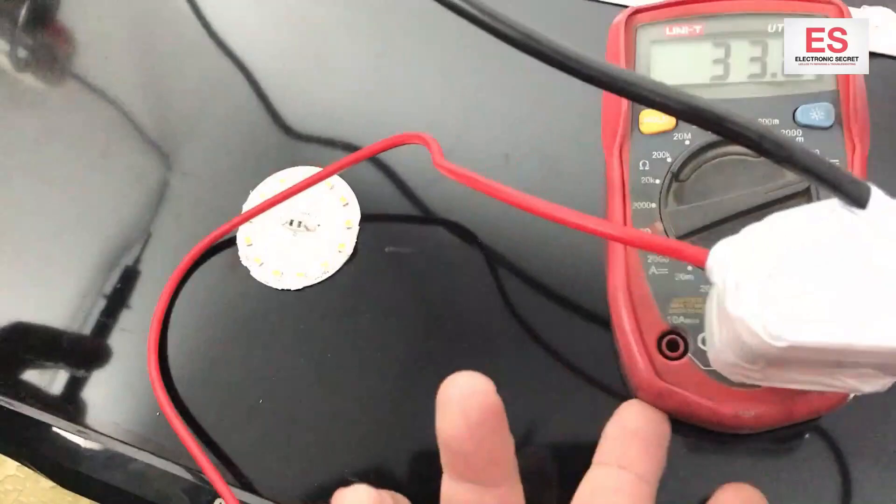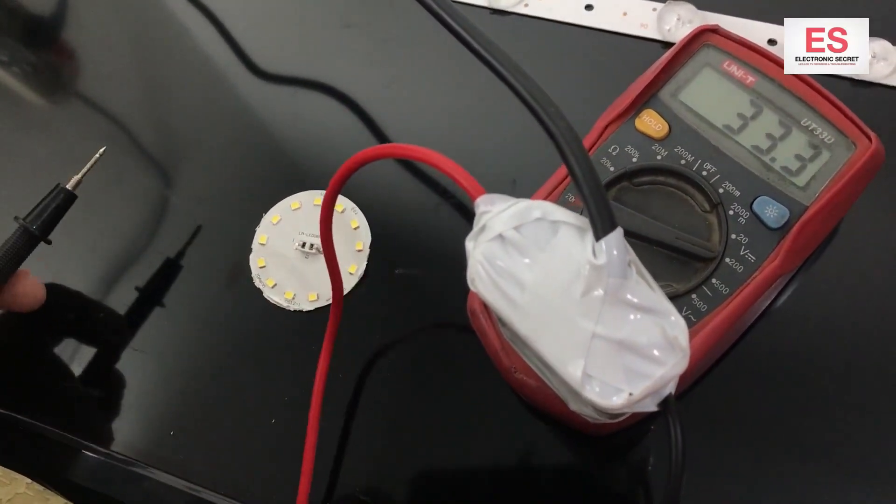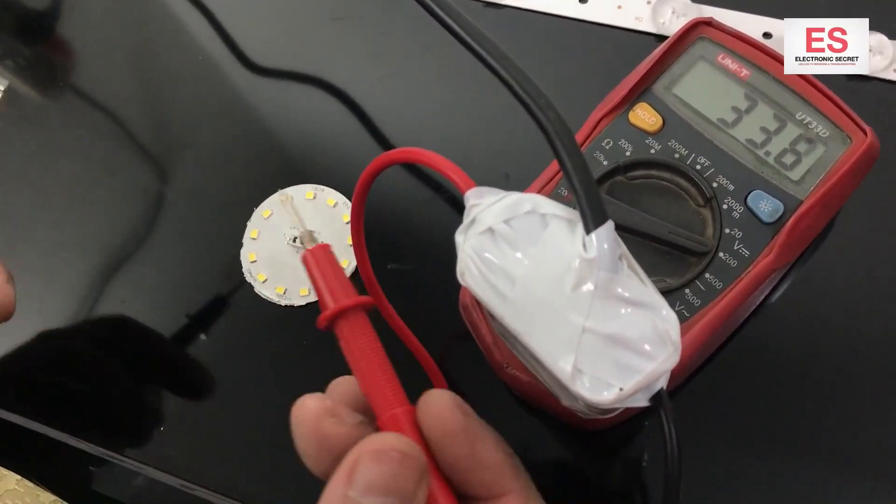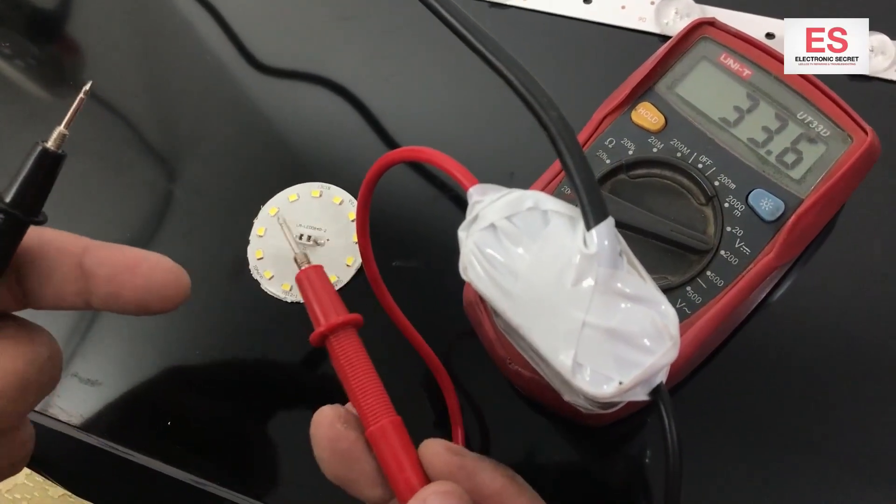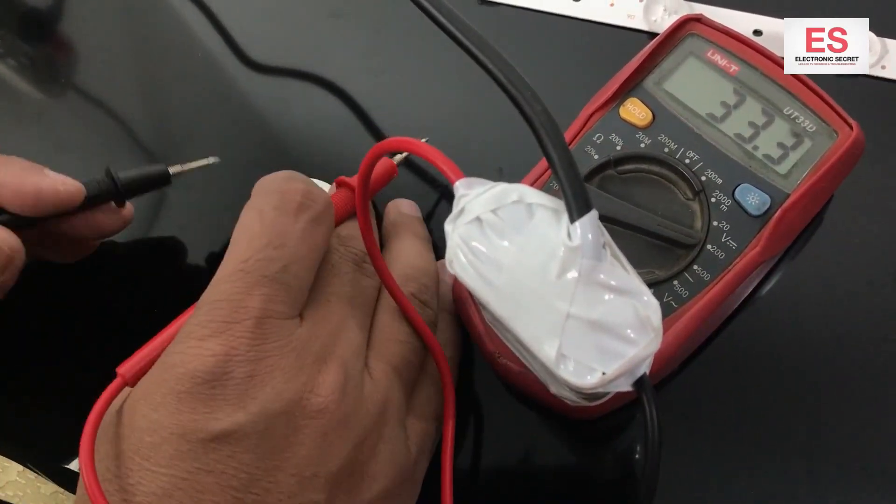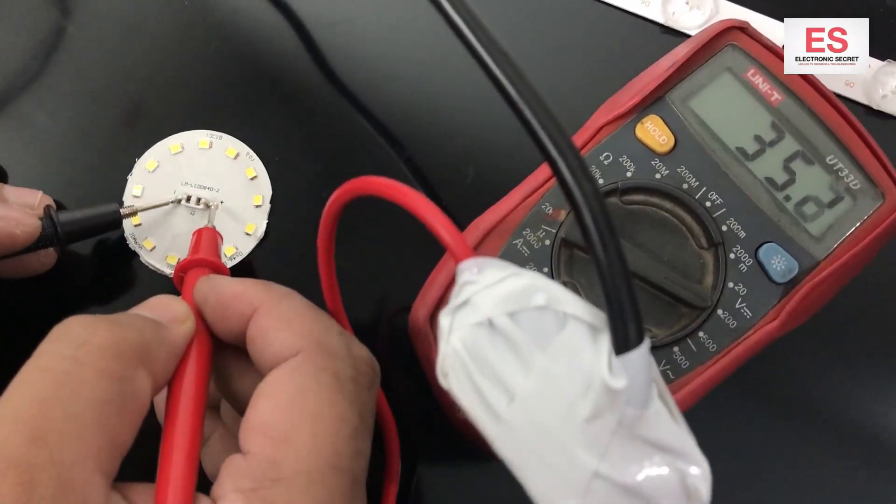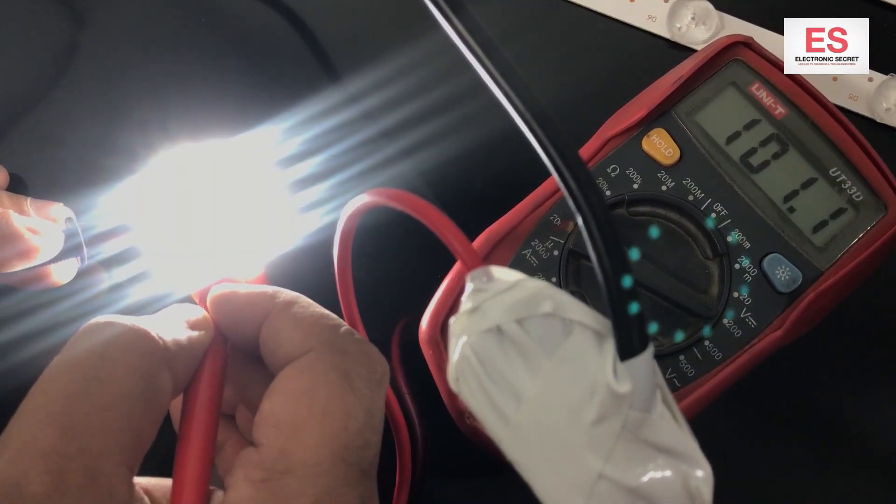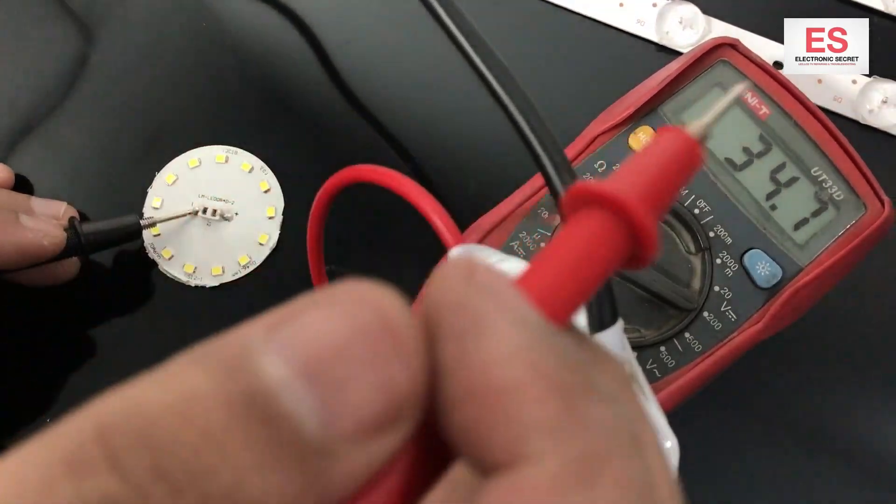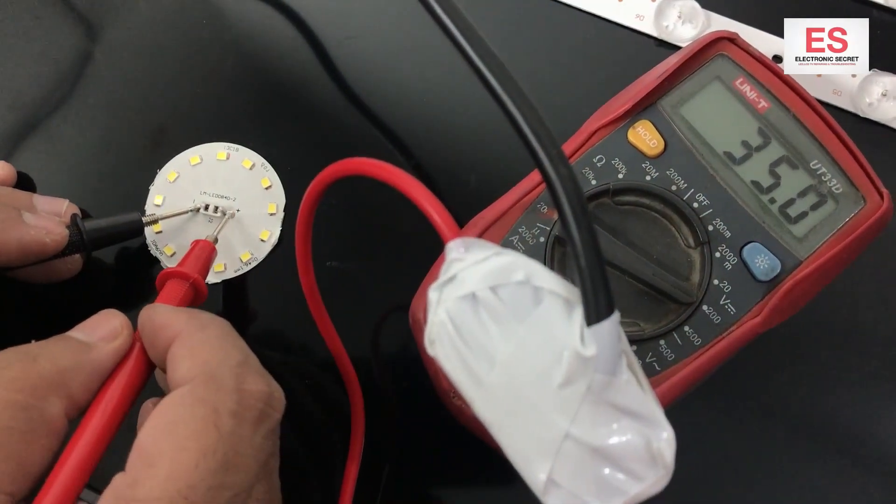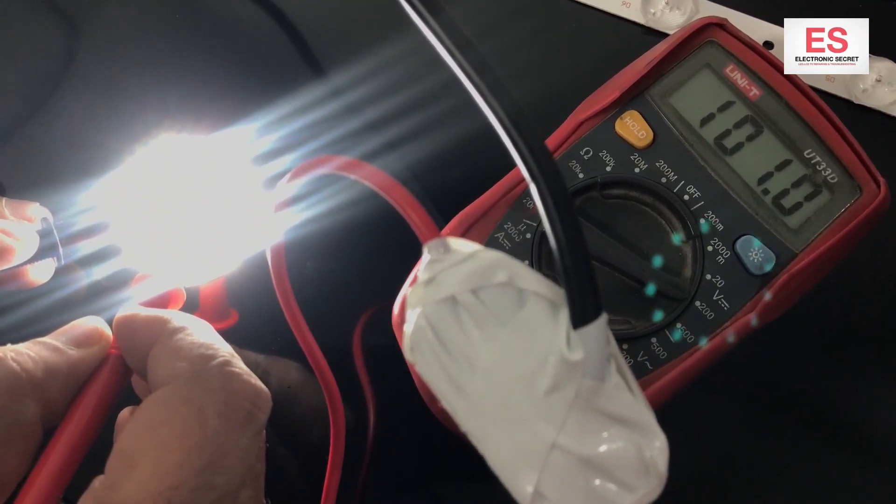Now take the black and red probe and place it on the minus and plus signs on the bulb strip. You can see that all the bulb strip is glowing and 100 volt is showing on the meter. So our tester is working fine.